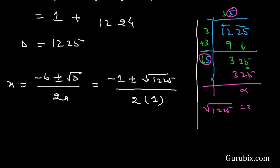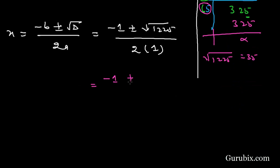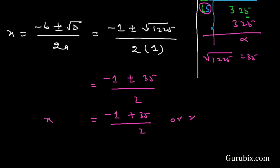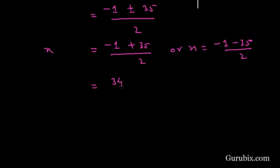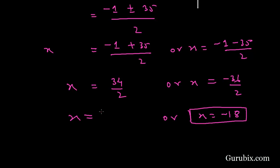So x equals minus 1 plus or minus 35 over 2. This gives two values: x equals minus 1 plus 35 over 2, which is 34 over 2 equals 17, or x equals minus 1 minus 35 over 2, which is minus 36 over 2 equals minus 18.